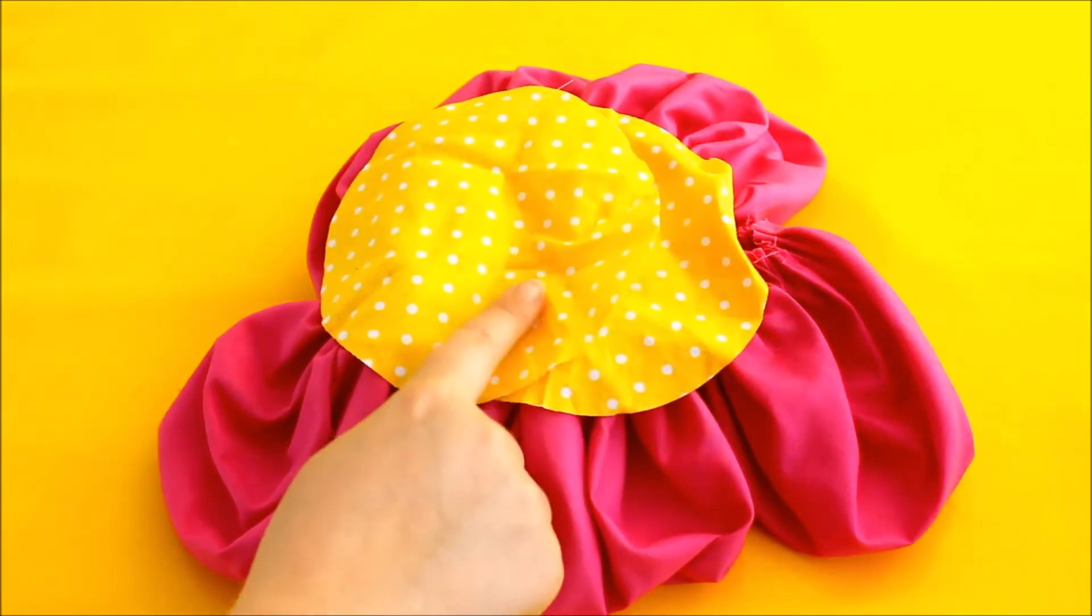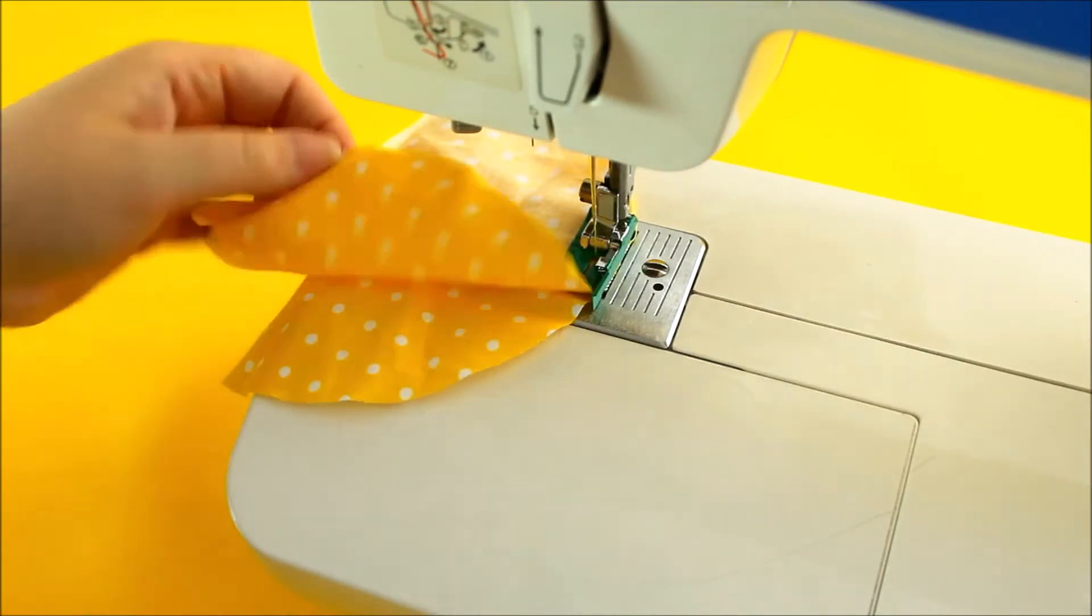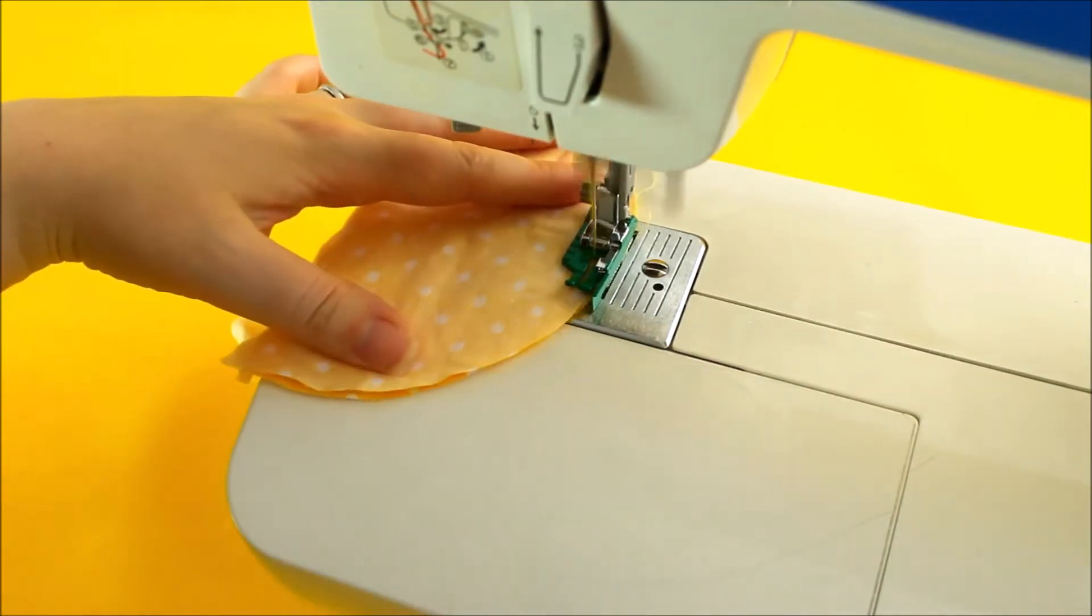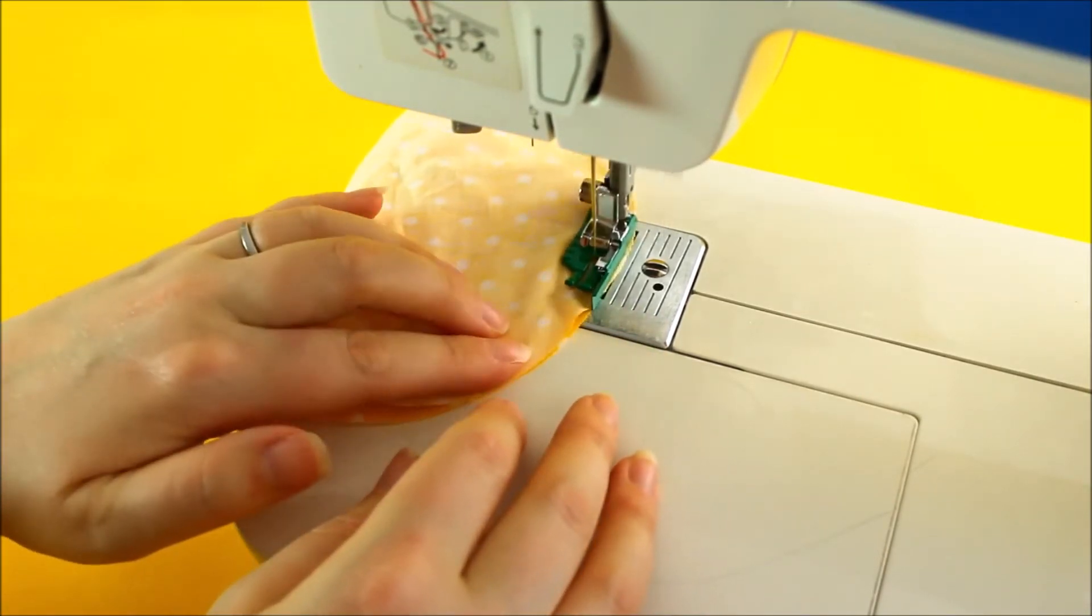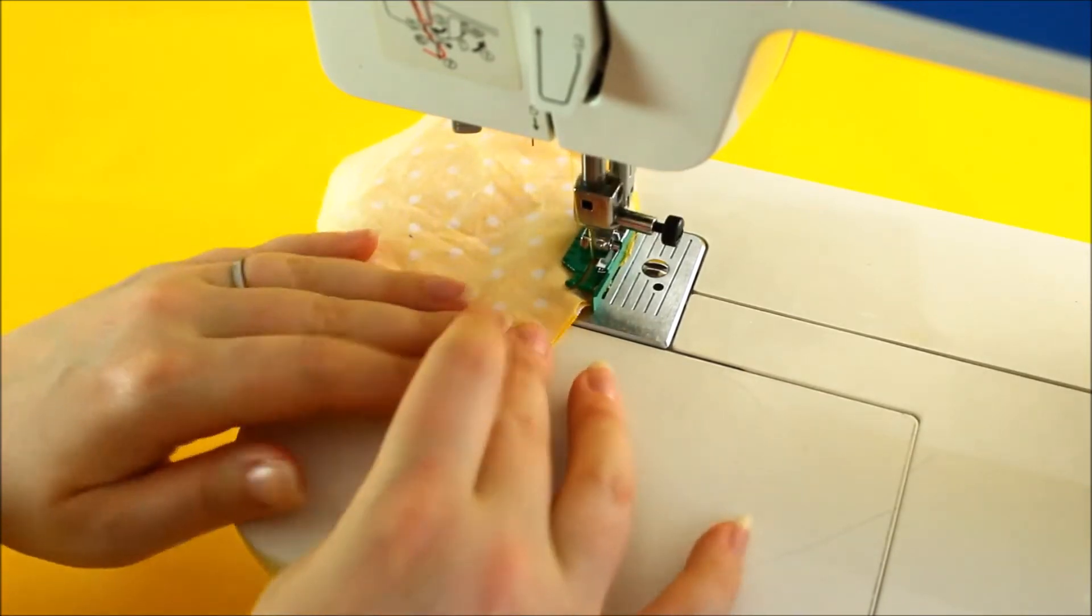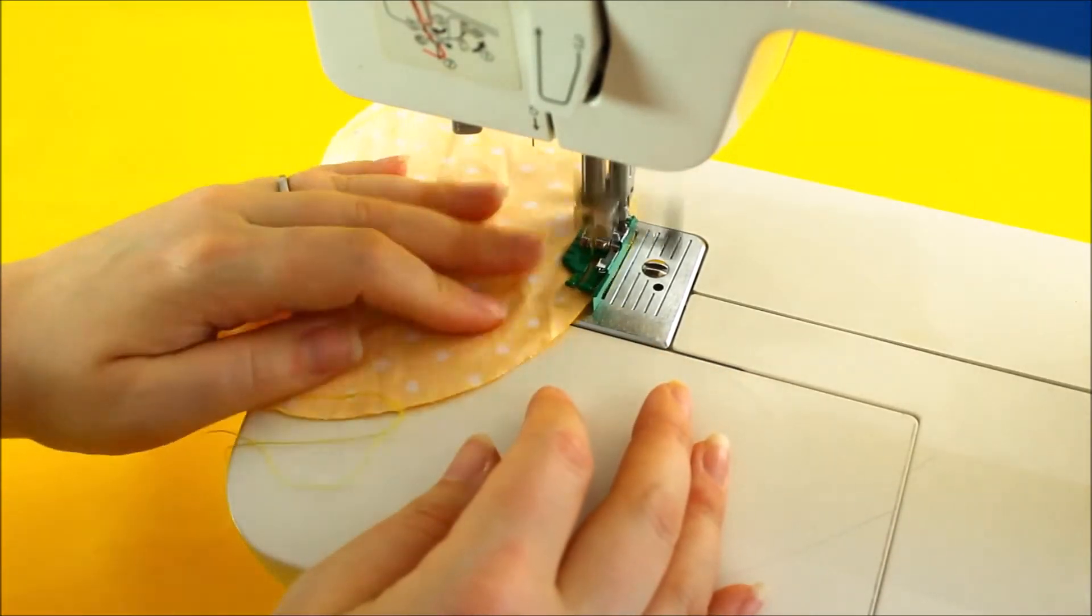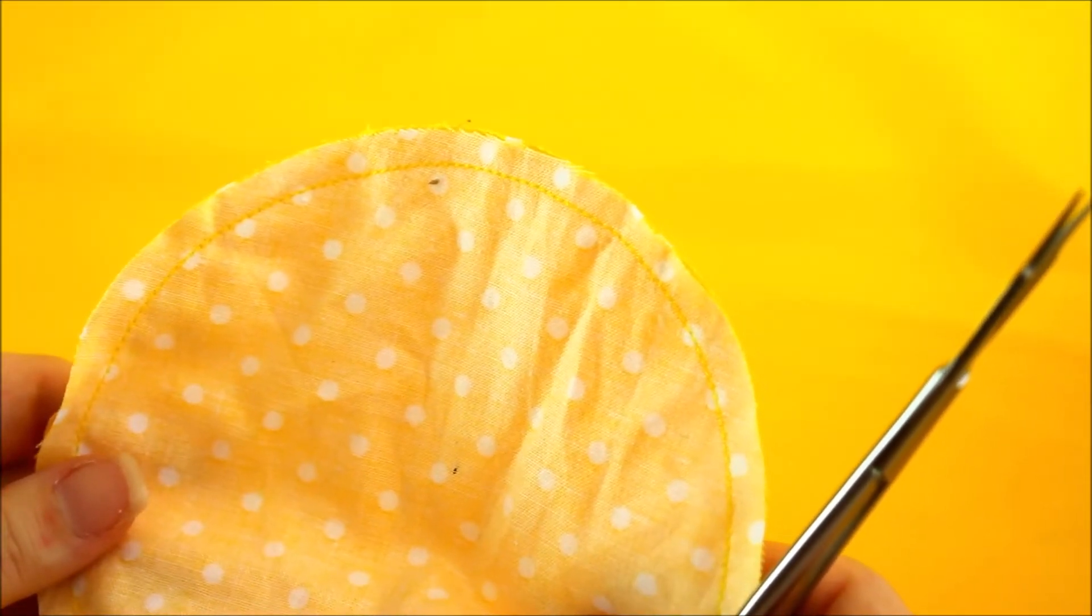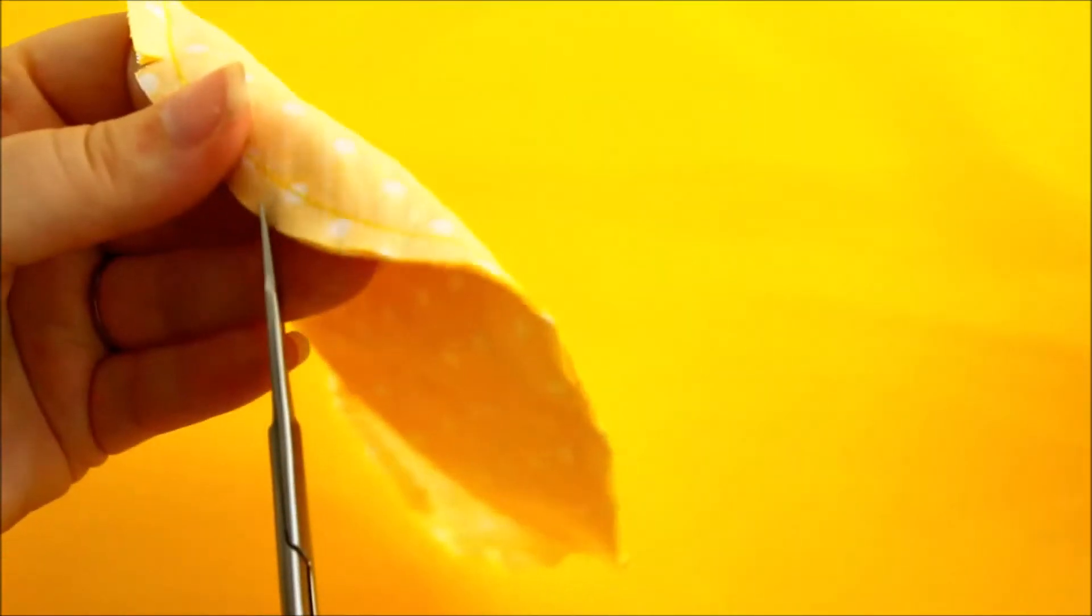Next up, you're going to want two circles that are five inches in diameter. Pop my two circles pattern side together. We're just going to sew all the way around, leaving a little one inch gap to be able to turn it. Now we're just going to clip around the edges just to make it easier to turn so it lies a bit more flat. So just a few little snips. Don't cut your stitching.